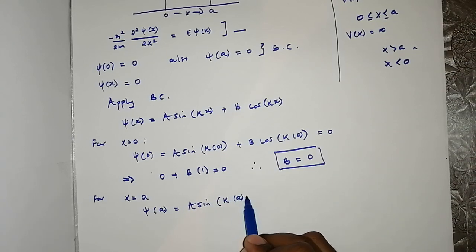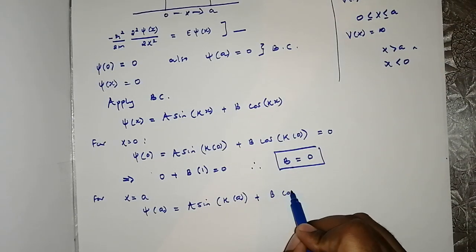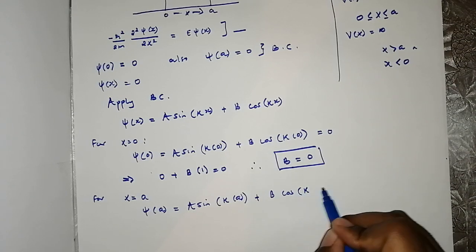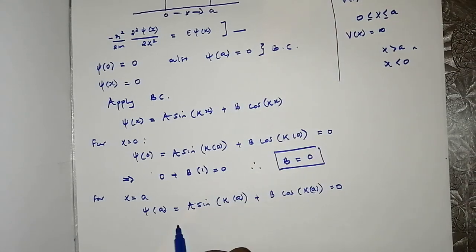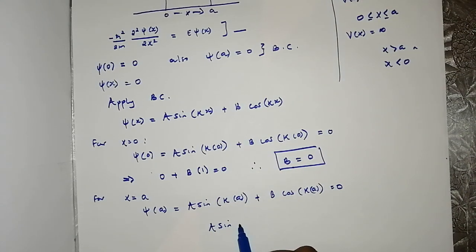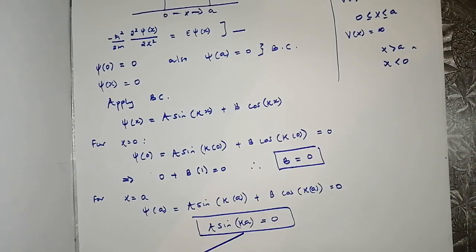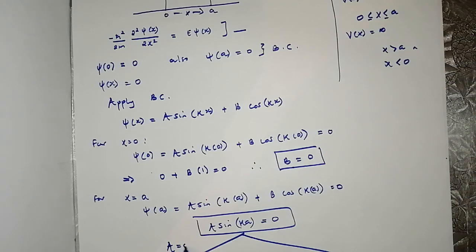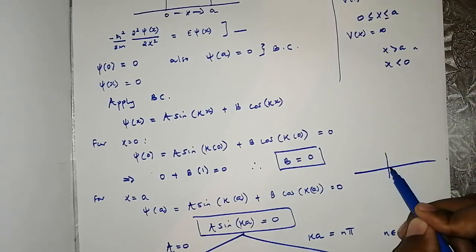Secondly, for x=a, we apply the boundary condition: A sine(ka) + B = 0. Since B is already zero, this gives A sine(ka) = 0. This will be satisfied if A equals zero or if ka = nπ, where n is an integer — as you remember from the sine graph.